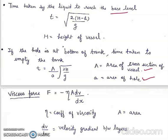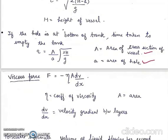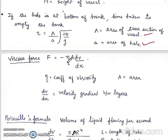Viscous force F is equal to minus eta A dv upon dx. Eta is the coefficient of viscosity. A is area. dv by dx is velocity gradient between the layers.